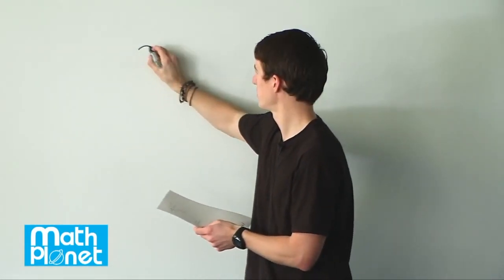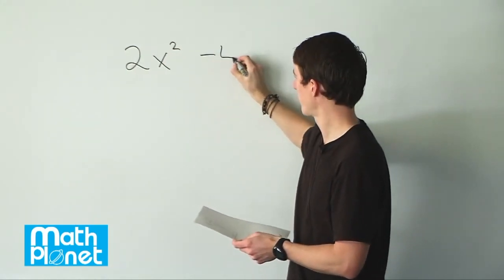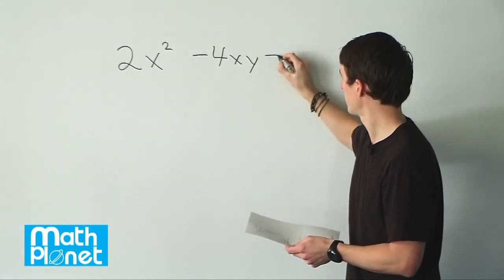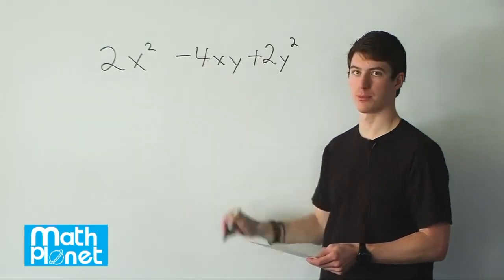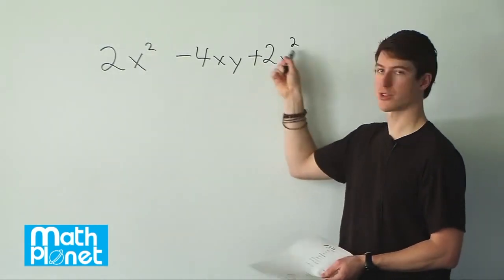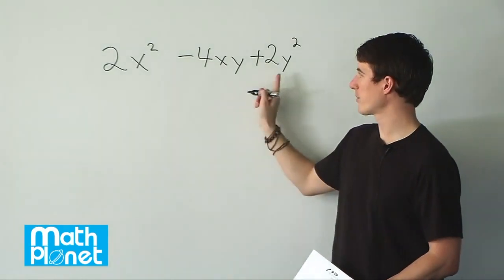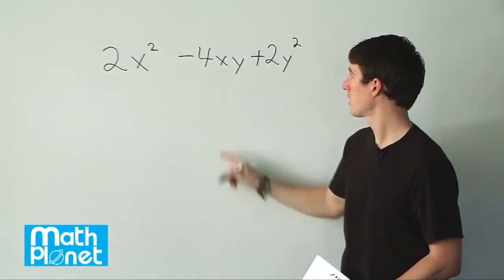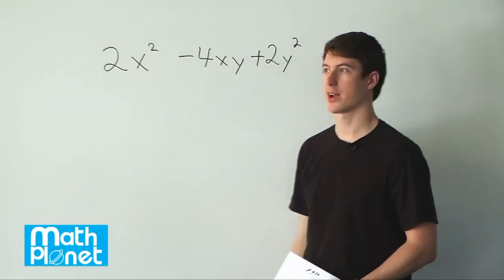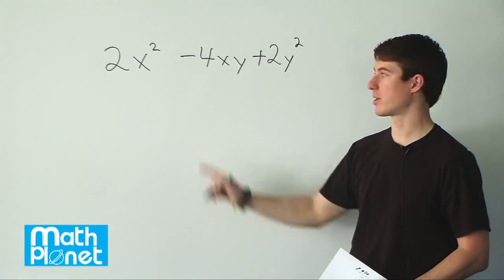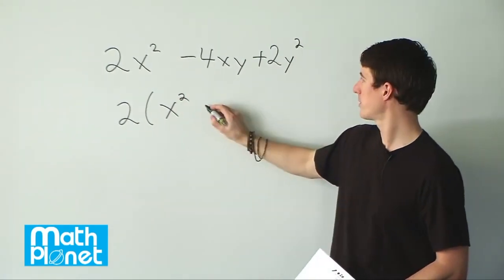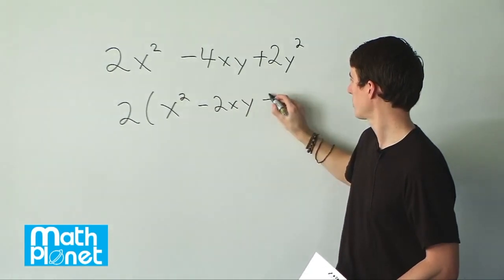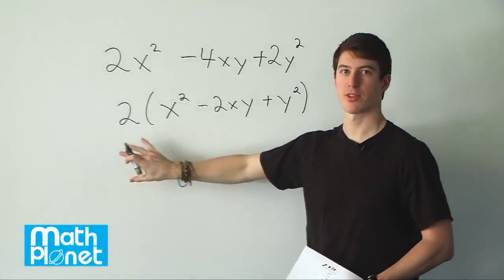Here we have an algebraic expression that we want to factorize. The original expression is 2x squared minus 4xy plus 2y squared. So we have our x term, our y term, and our cross term. We're going to factorize this in the normal way — we're often used to this just being a numbers term, but it's the same process. We want to split this into two different quantities. Before we do that, we can see we can automatically simplify by factoring out a common factor of 2, since 2 is common to all three terms. So we say 2 times x squared minus 2xy plus y squared.